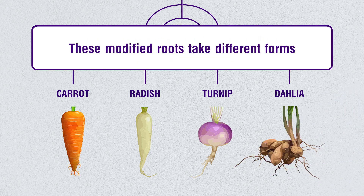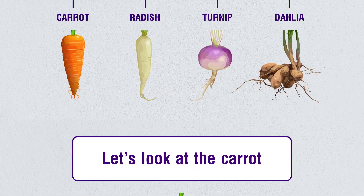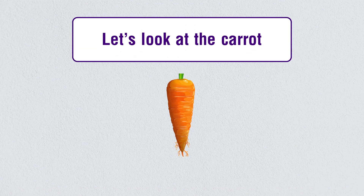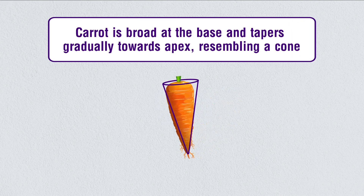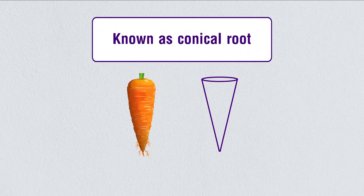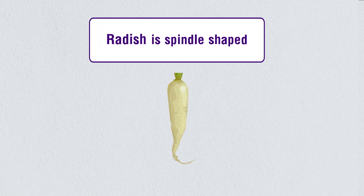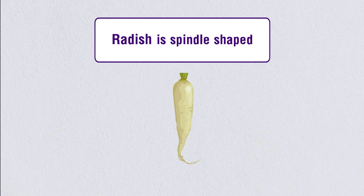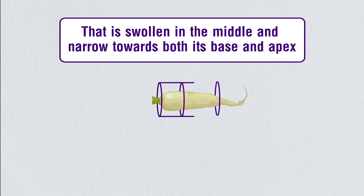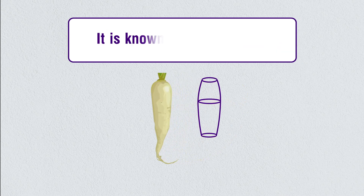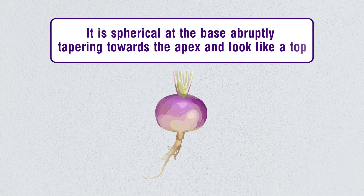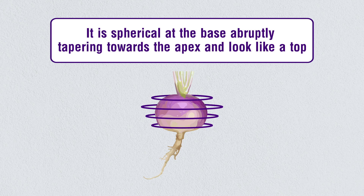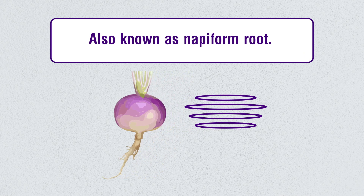These modified roots are usually swollen and take different forms. Carrot is broad at the base and tapers gradually towards the apex — it resembles a cone and is known as a conical root. Radish appears like a spindle, swollen in the middle and narrow towards both ends — this type is known as a fusiform root. In the case of turnip, it is spherical at the base and suddenly tapering towards the apex, looking like a top and known as a napiform root.